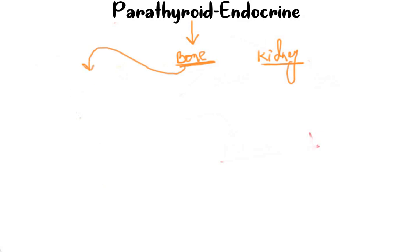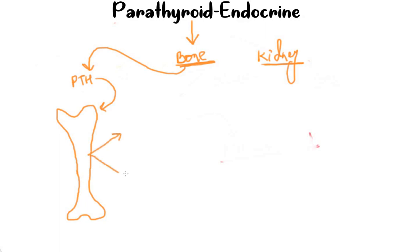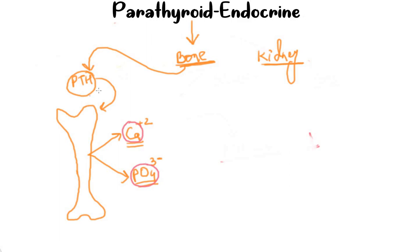Here we have the bone — I am drawing the bone. As the parathyroid hormone is released it will go into the bone and it will cause the resorption of calcium and phosphate. So the big picture is that when PTH acts on the bone it increases the resorption of calcium and phosphate, and the calcium and phosphate are then dumped into the blood.